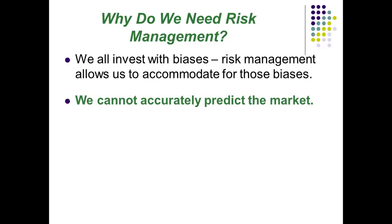Another thing we need to know and accept is that we can't accurately predict the market. No matter how good you think you are at predicting the market, you're probably going to be wrong at least once per seven years, which is when the market tends to crash. Don't bank on your own skill. Most people are overconfident in their skills, and the truth is we really can't accurately predict the market.